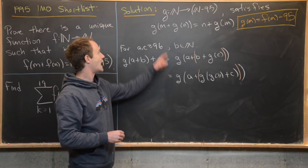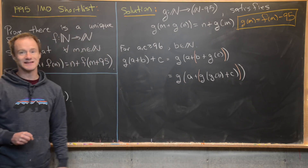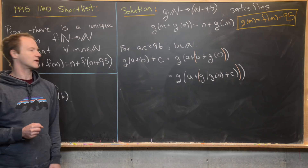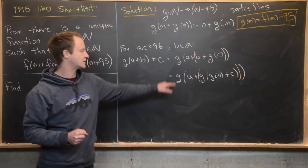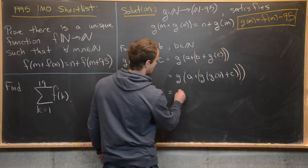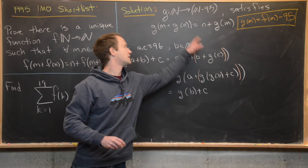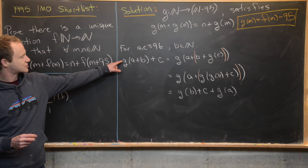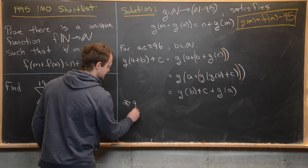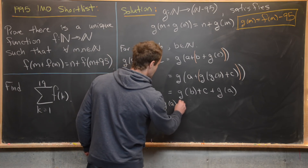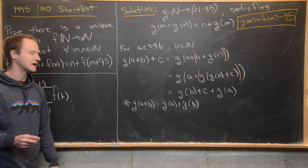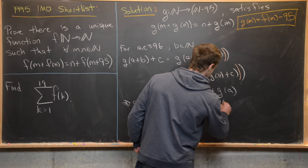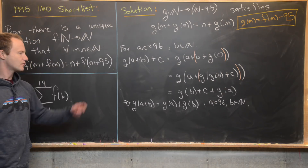Next, instead of working inside, we apply our functional equation from the outside. That gives us g(b + c) + g(a), where g(b + c) plays the role of n and g(a) plays the role of m. Looking at the extreme left and right sides of the equation, we get g(a + b) = g(a) + g(b) — a sort of additive/linear property — with the restriction that a ≥ 96, and b can be any natural number.